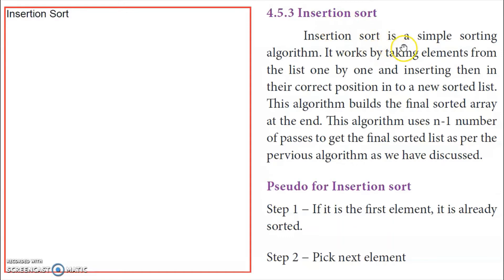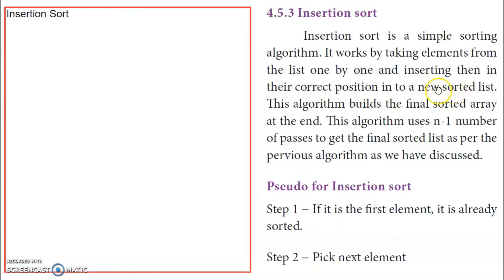Insertion sort is a simple sorting algorithm. It works by taking elements from the list one by one and inserting them in their correct position into a sorted list. A new sorted list will be created. In the front part of the list, there is a sorted portion, and in the second half there are unsorted elements.